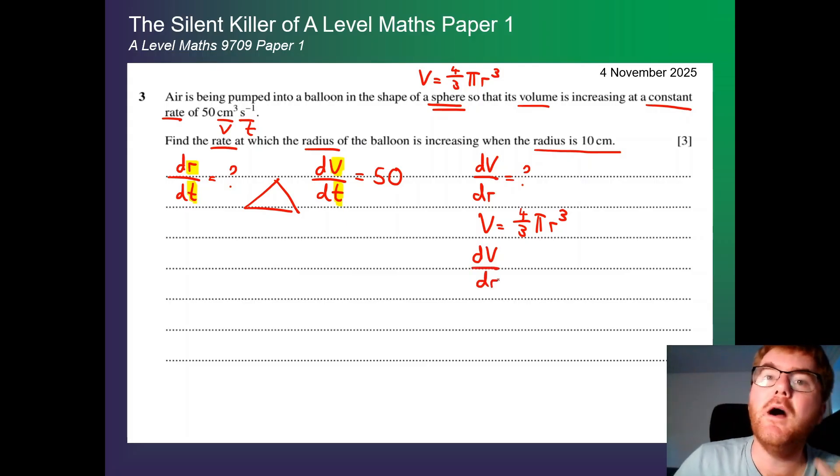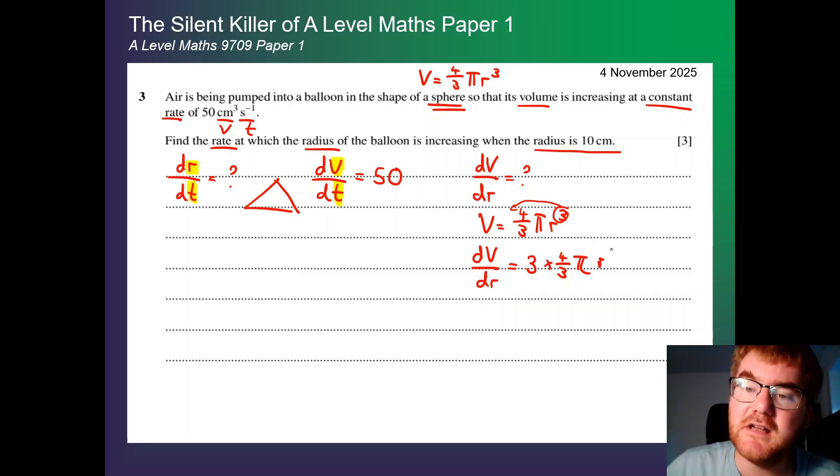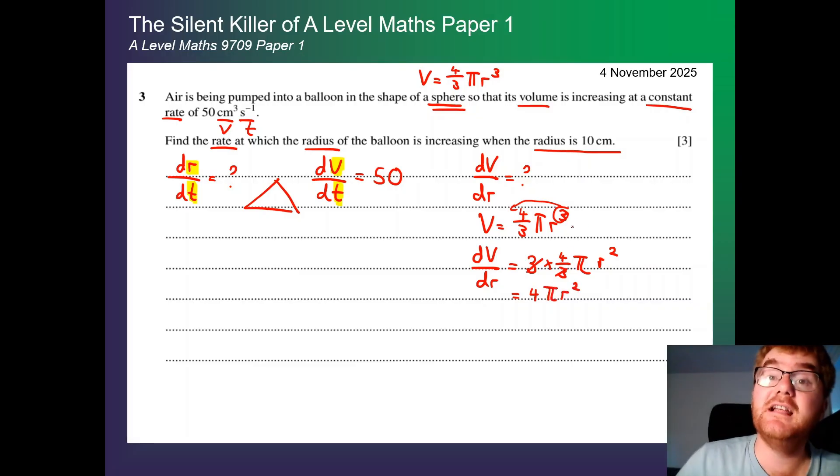Normally, we're used to dy by dx. But notice our v is the y and the r is the x. So if we differentiate this, we use our normal differentiation procedure. We take the three, we bring it to the front. So we get three times four thirds pi. Remember, pi is just a number. We reduce the index by one. So we get r squared. This cancels. And we actually get the surface area formula. So four pi r squared. So we now have the relationships that we need in order to answer this question.